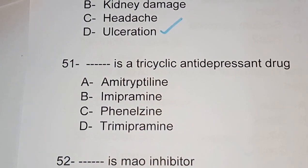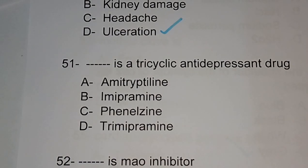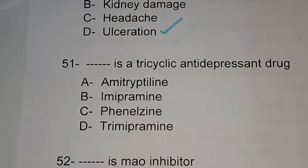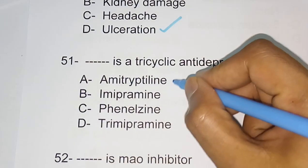Question number 51: which is a tricyclic antidepressant (TCA) drug? Options are amitriptyline, imipramine, phenelzine, trimipramine. Amitriptyline, imipramine, and trimipramine are all TCAs; phenelzine is not. Since the question asks for a TCA and there is no 'all of the above' option, go for amitriptyline.